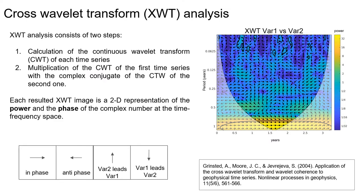The links between ground deformation and the considered driving factors were identified using a cross-wavelet transform analysis. It consists of two steps and the result is a 2D representation of the power and the phase between the two time series at the time-frequency space. As seen in the example image, the power is represented by the color and the phase related to the time lag by the arrows.